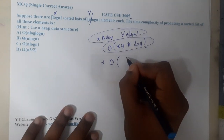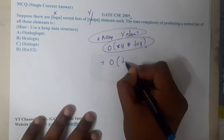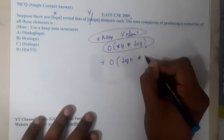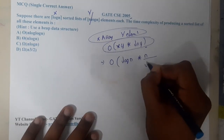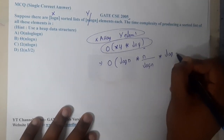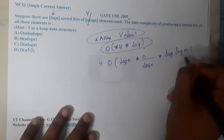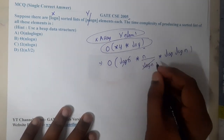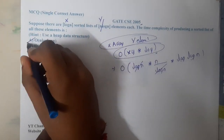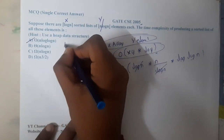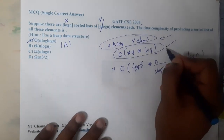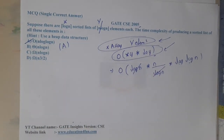Substituting the values, it becomes O(log n · (n/log n) · log(n/log n)), which simplifies to O(n · log(log n)). Cancelling the log n terms, we end up with n log log n, so option A is the correct answer.